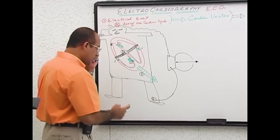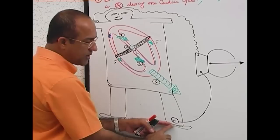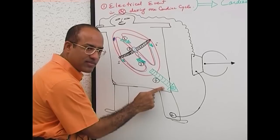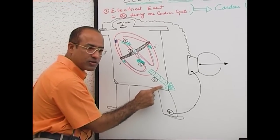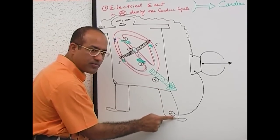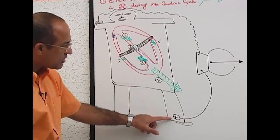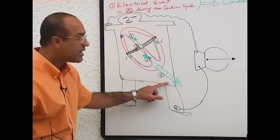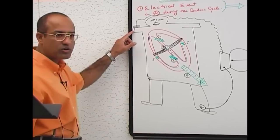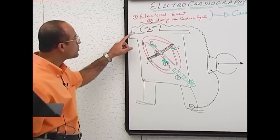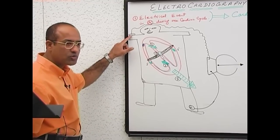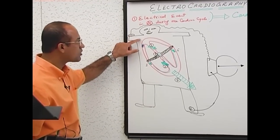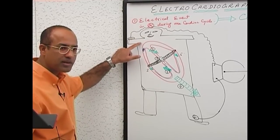Now listen. We have applied the positive electrode on the foot because it is convenient to apply here. But actually, whatever electrical current is coming to this point will be conducted to the foot. So applying the electrode to the foot is equivalent to applying the electrode at the junction of the left lower limb and the trunk. In the same way, when you apply the electrode on the right arm, that electrode will sense the same electrical activity as if the electrode is applied at the junction of the right upper limb and the trunk.